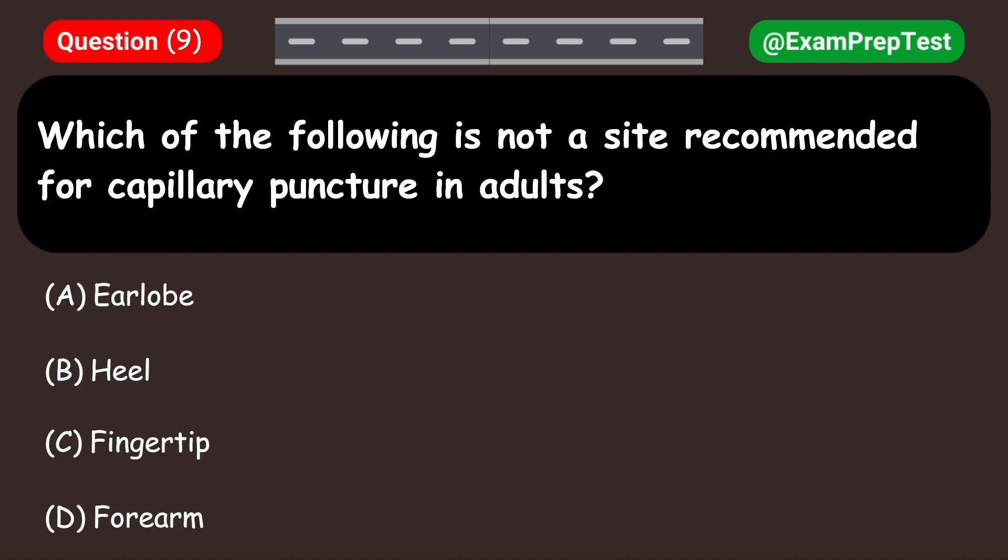Which of the following is not a site recommended for capillary puncture in adults? A. Earlobe. B. Heel. C. Fingertip. D. Forearm. Answer: B. Heel.